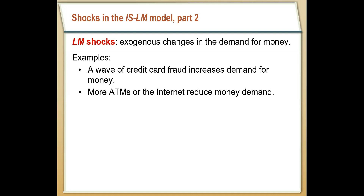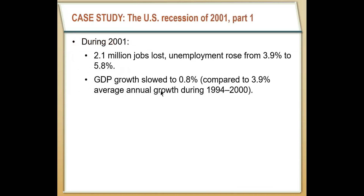A great example of this was the recession the US had in 2001. During that recession, unemployment went up really quickly in a short amount of time — from below 4% to almost 6% in a matter of months. At the same time, GDP growth cratered: it was at 4% and slowed to less than 1%.